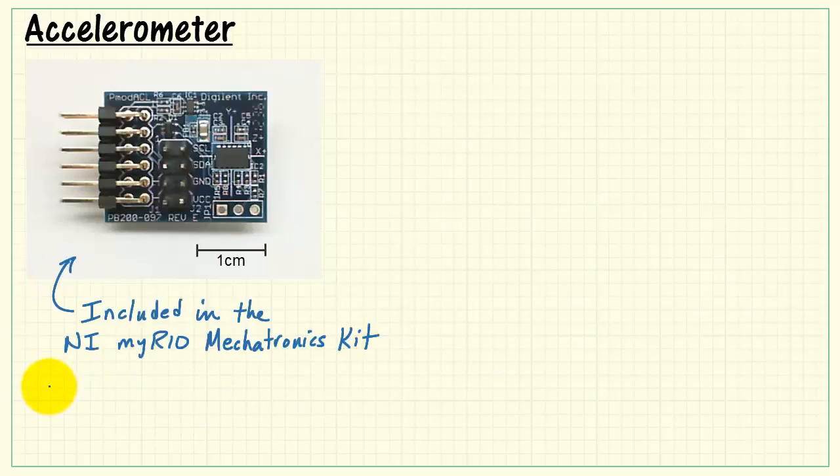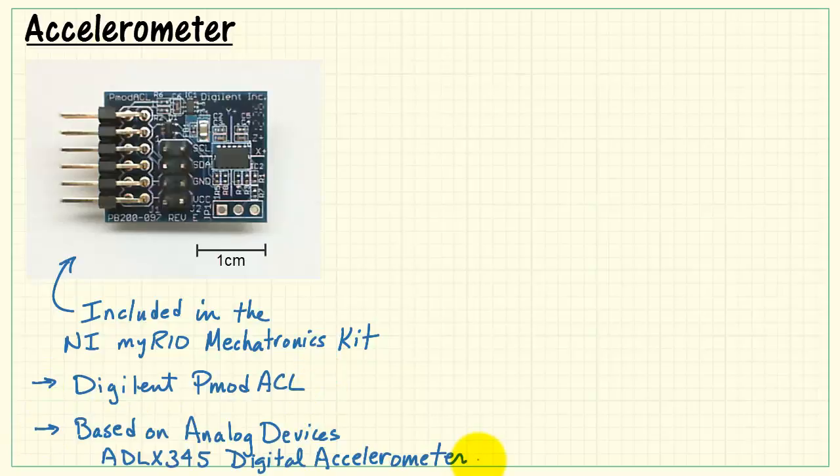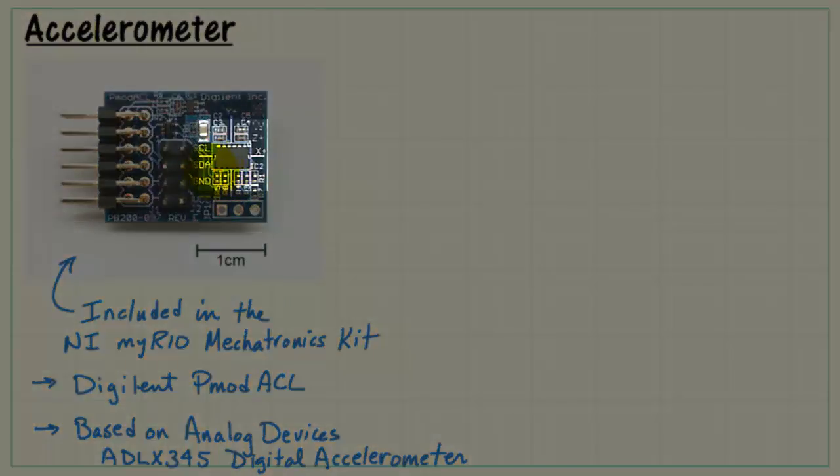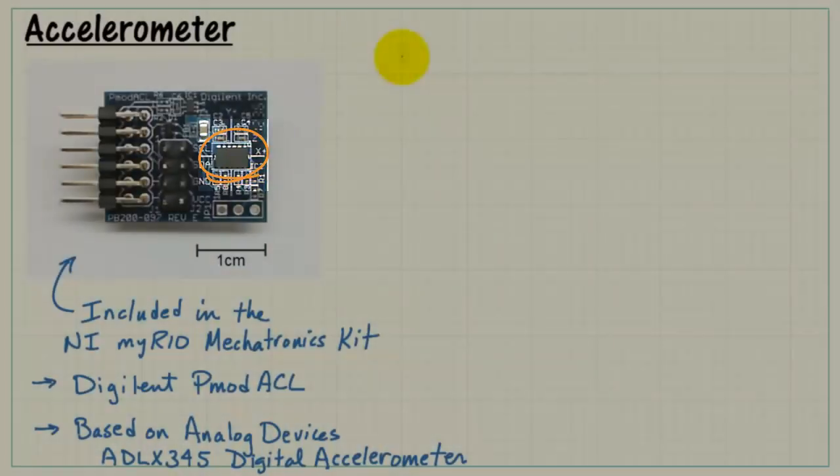This is the accelerometer that's included in the NI MyRio mechatronics kit. It's the Digilent PMOD ACL. It's based on the analog devices ADXL345. This is a three-axis accelerometer.